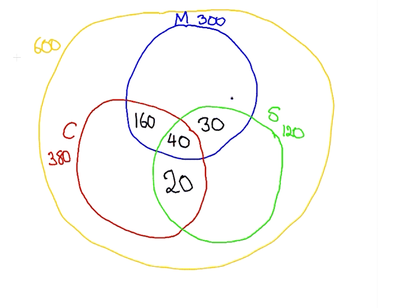So, we have accounted for quite a lot of the student group already. Let's determine how many are studying Statistics only. We have already counted 90 of the students studying Statistics: that is 20 plus 40 plus 30. Since there are 120 students altogether studying Statistics, that means there are 30 studying Statistics subjects only.